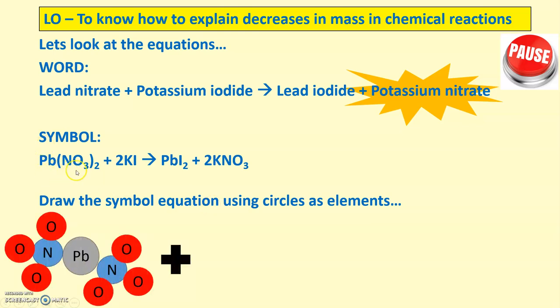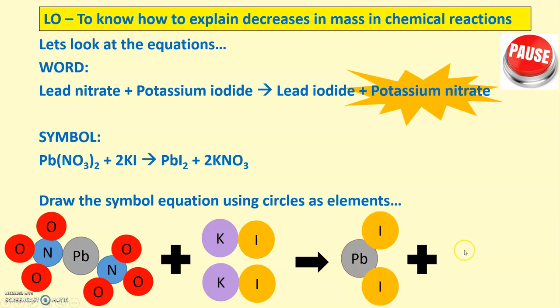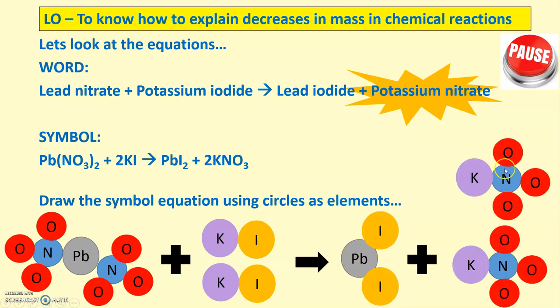We have Pb(NO3)2 there, lead nitrate, which is just shown here. We've got six oxygens, indicated by this three times two there. Two nitrogens in brackets and one lead, indicated there. Plus, two lots of potassium iodide. Arrow, so these are reacted together to make lead iodide and potassium nitrate.